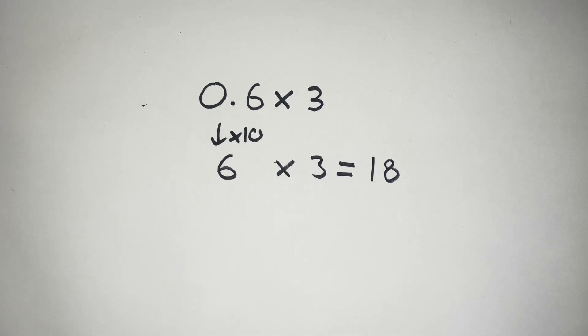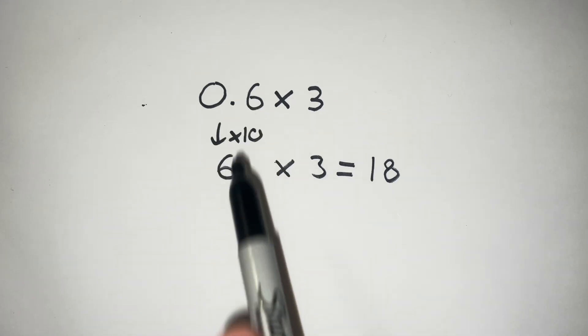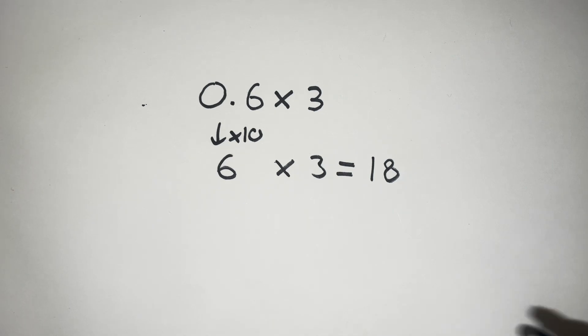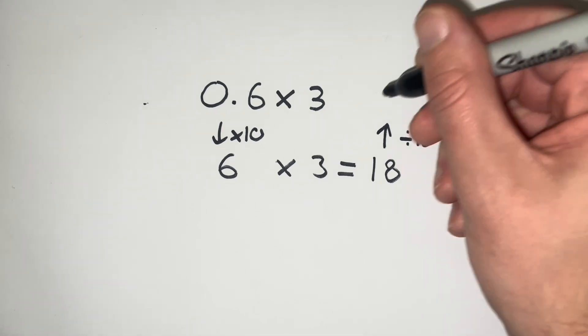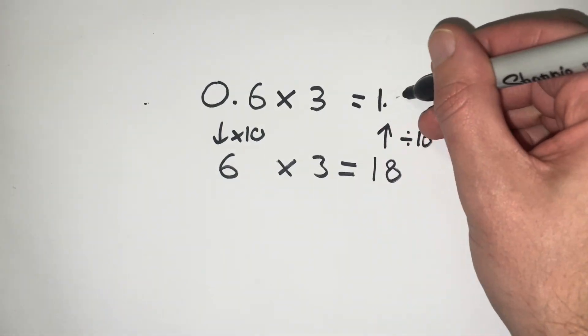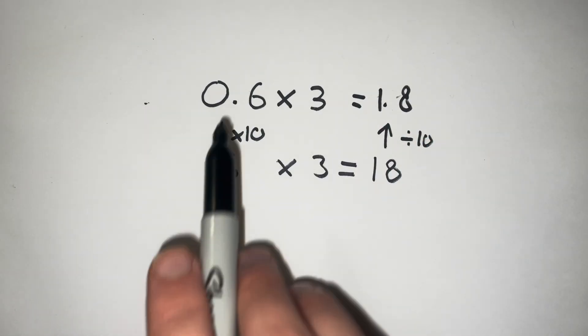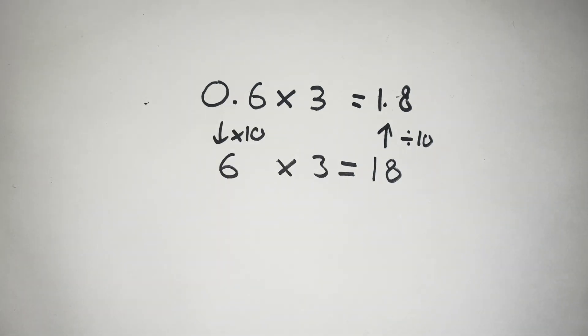Now this isn't our final answer because to get to our final answer we need to undo that multiplying by 10 step. We need to divide by 10. So I'm going to divide this 18 by 10, and that's going to give me 1.8. So my answer to 0.6 times 3 is 1.8.